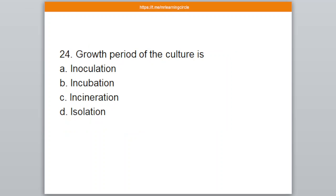Question number 24. The growth period of a culture is — A: Inoculation, B: Incubation, C: Insemination, D: Isolation. The correct answer is option number B — Incubation.